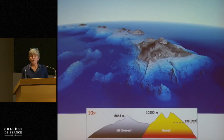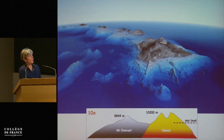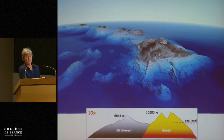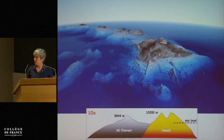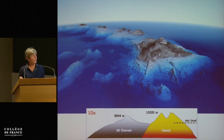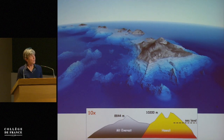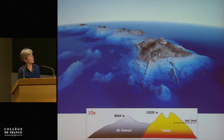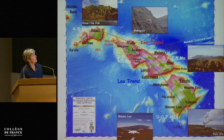To give you a perspective, a catchy diagram: all I want you to remember is that from the bottom of the ocean, Hawaii is taller than Mount Everest. Mauna Loa is the largest volcano, and it's also the tallest mountain on Earth.